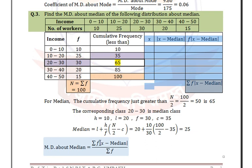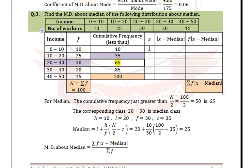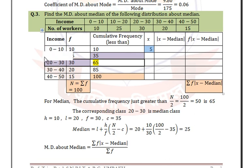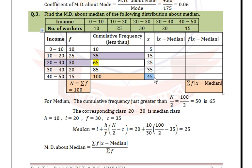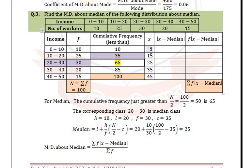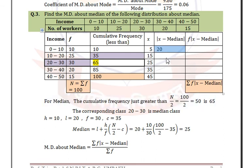To find mean deviation about median, we first calculate |x - median| and then multiply by frequency f. Here x is the midpoint of each class: 5, 15, 25, 35, 45. With median = 25: 5 - 25 = -20 (absolute 20), 15 - 25 = -10 (absolute 10), 25 - 25 = 0, 35 - 25 = 10, 45 - 25 = 20.